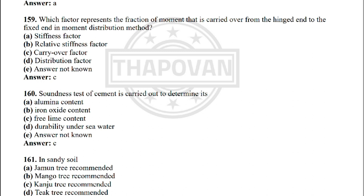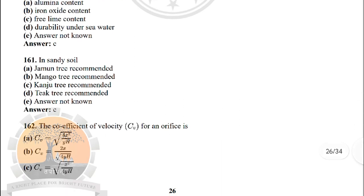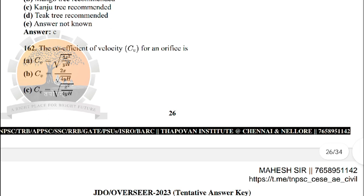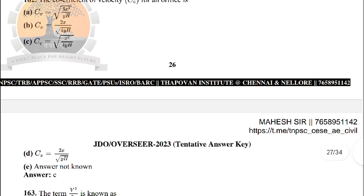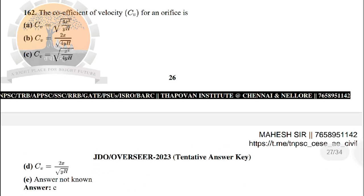Next: soundness test of cement is carried out to determine — the correct answer is option C: free lime content. Next: in sandy soil — option C: conjunctive use recommended. Next: the coefficient of velocity Cv from an orifice is — the correct answer is option C: Cv = √(x² / (4y × H)).